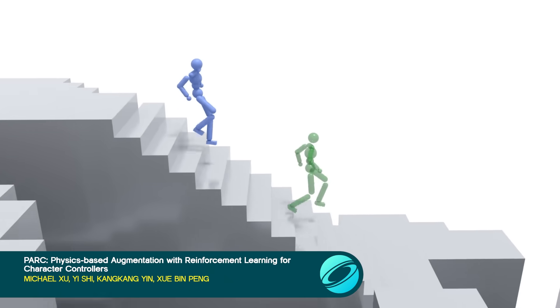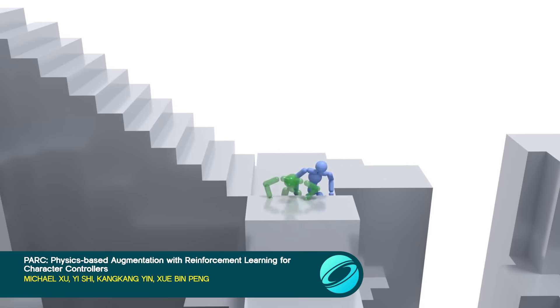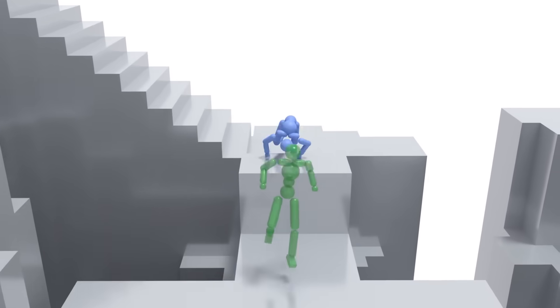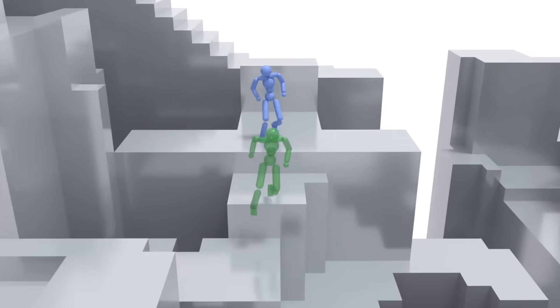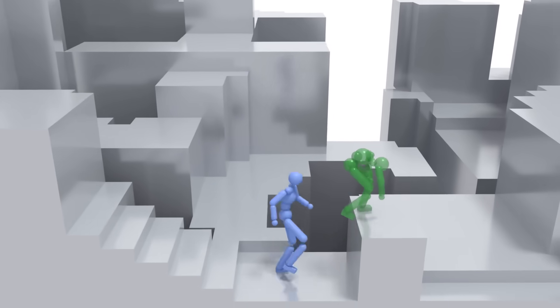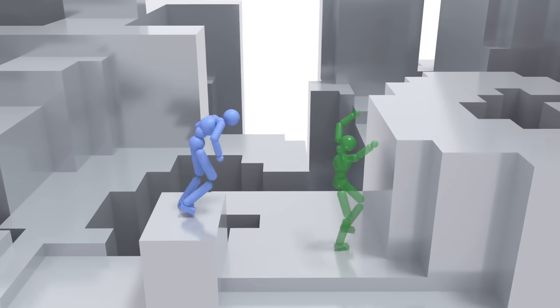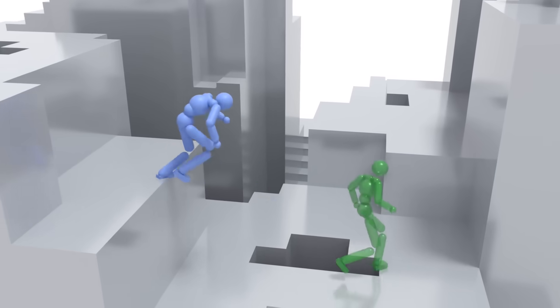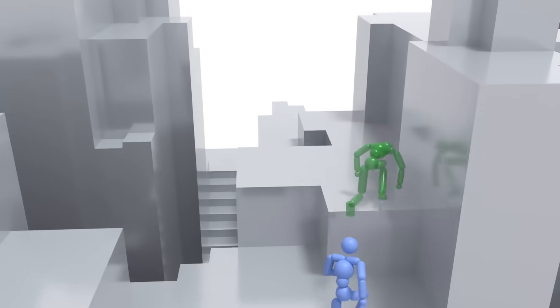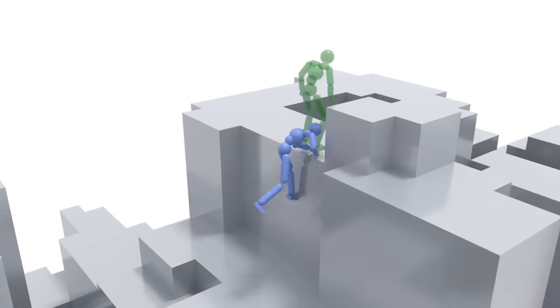Science doesn't just leap forward — sometimes it parkours. This framework bootstraps a versatile skill set from a few basic terrain traversal skills by generating synthetic motions, correcting these motions to be physically plausible, and iterating.